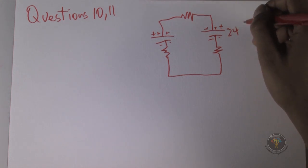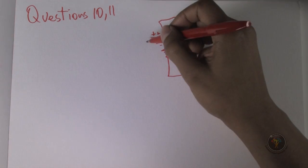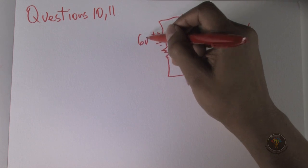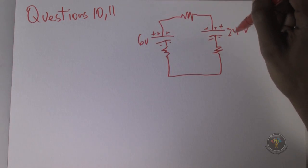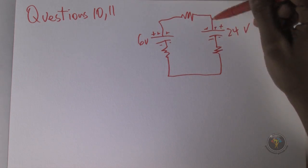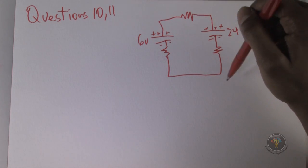So we know that this battery is going to overpower the circuit and that the direction of flow of current will be in this direction because this one will be stronger.